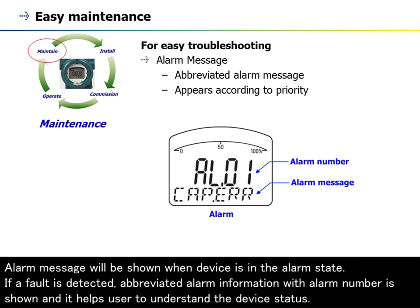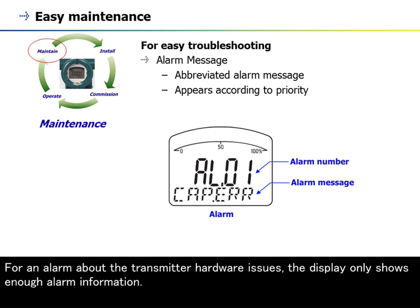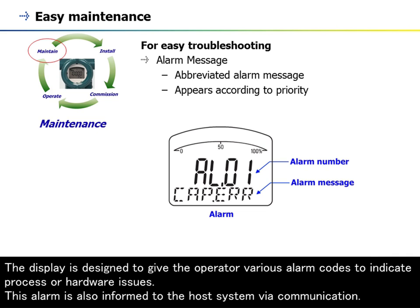An alarm message will be shown when the device is in the alarm state. If a fault is detected, abbreviated alarm information with alarm number is shown to help users understand the device status. For an alarm about parameter settings, process values, or operating environment, the display alternates between the alarm number and the process value. For an alarm about transmitter hardware issues, the display only shows alarm information. This alarm is also communicated to the host system via communication.